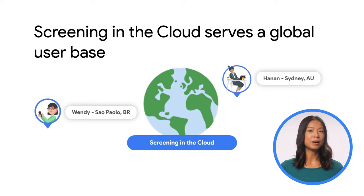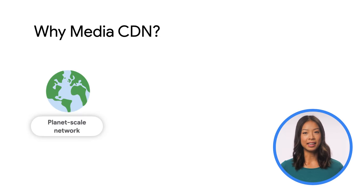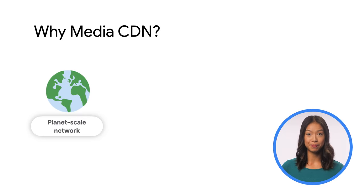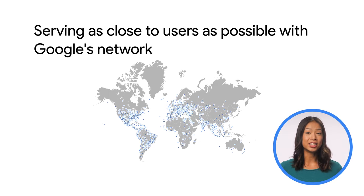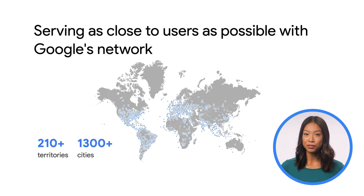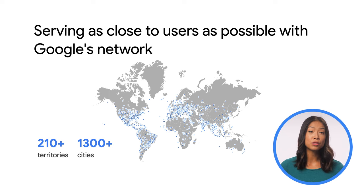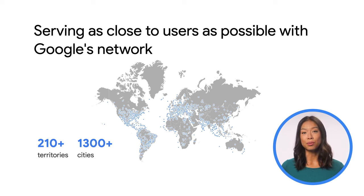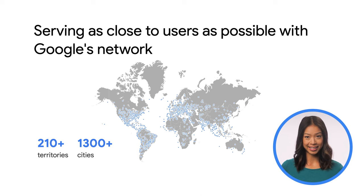Screening in the Cloud cares about a few key things that MediaCDN brings to the table. The first is its global network that allows them to serve their content as close to Wendy and Hanan as possible. MediaCDN shines here because its underlying infrastructure is actually built on Google's planet-scale network — the same infrastructure that supports YouTube to serve videos to users around the world. Screening in the Cloud gets to use this network that spans more than 210 territories and 1,300 cities.